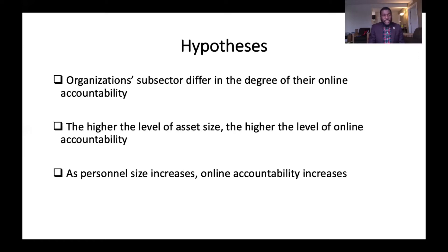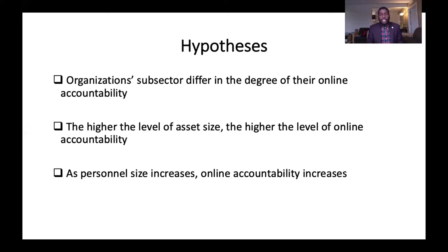The second hypothesis is: the higher the level of asset size, the higher the level of online accountability. This has been supported by previous research. Saxton and Guo in 2011 found that online accountability is affected by the size of an organization's assets, with organizations having higher assets showing a higher level of online accountability. Slaten and her colleague also found that as asset size increases, financial disclosure and interactivity also increase. I am testing whether this is still valid today.